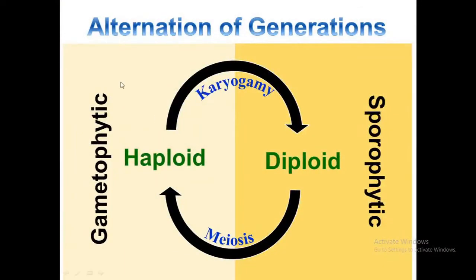To understand alternation of generation, we must know that a life cycle has two aspects: the somatic or morphological, and the cytological or chromosomal. A generation is regarded as a somatic phase. The alternation of generation refers to a situation in which a plant has two somatic phases — one is the haploid or gametophytic phase, and the other is the diploid or sporophytic phase. Both these stages regularly alternate during the life cycle.